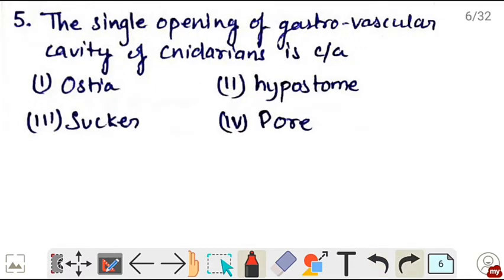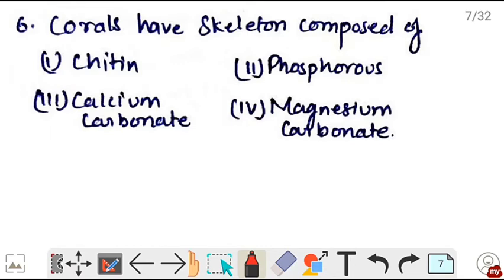Next, the single opening of gastrovascular cavity of cnidarians is called - so the single opening at the top is called hypostome. Correct is option 2. On this hypostome, the mouth is present. Next, corals have skeleton composed of - so corals have skeleton composed of calcium carbonate. Correct is option 3.